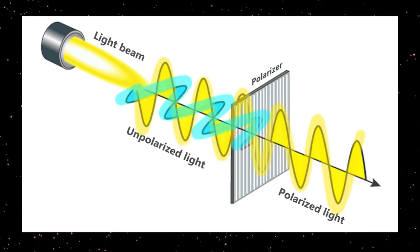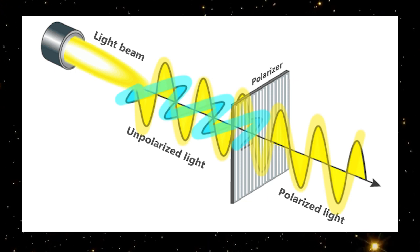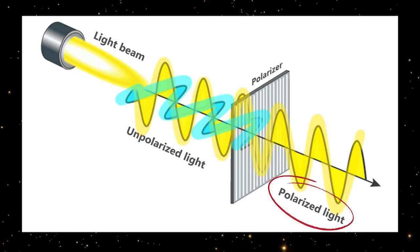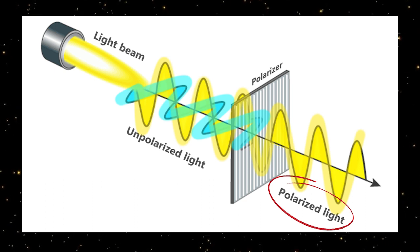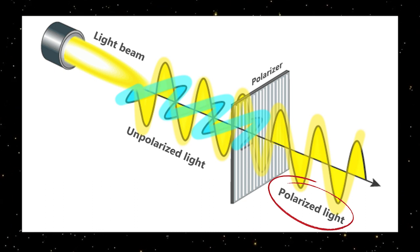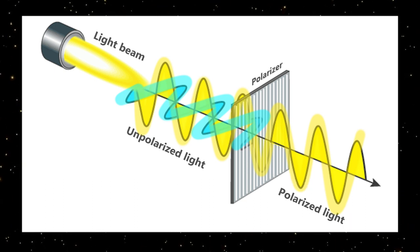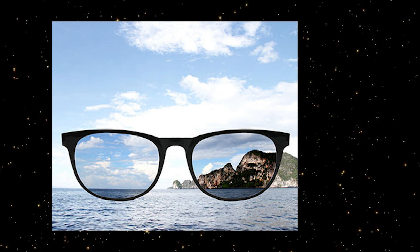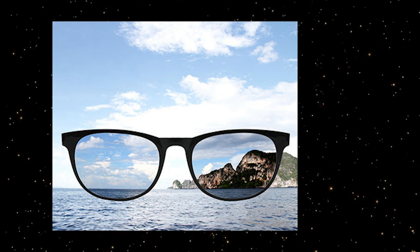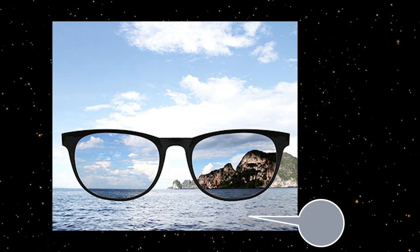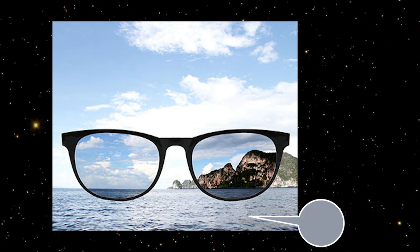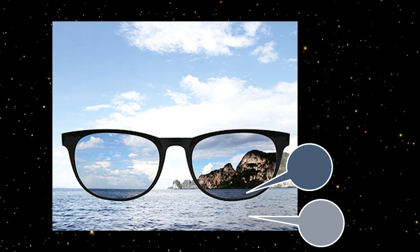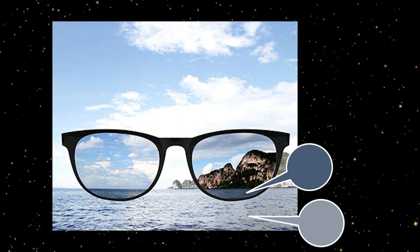Since some of the light beam has been blocked by the polarizer, the new polarized light has different properties compared to the original light beam, such as a lower intensity or brightness. In this photo, lenses in the sunglasses work as polarizers. You can see that the light that has passed through the lenses is darker because it's polarized. Light that is not in line with the polarizers gets blocked.